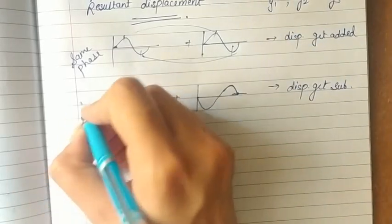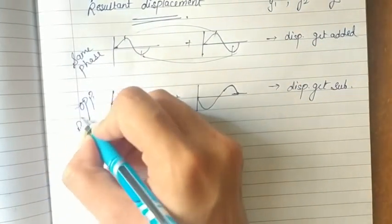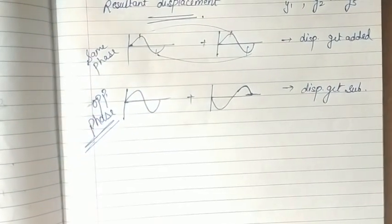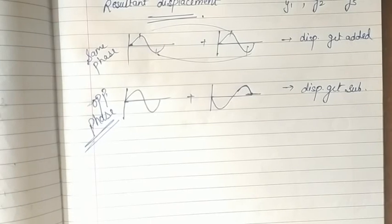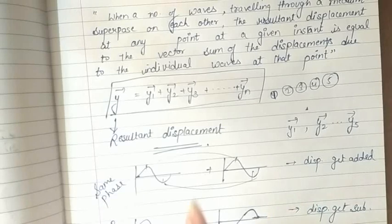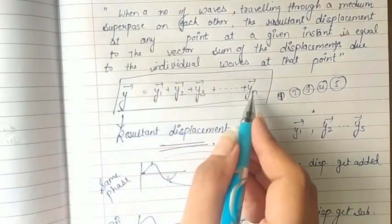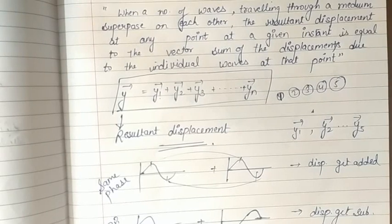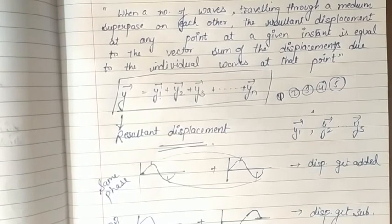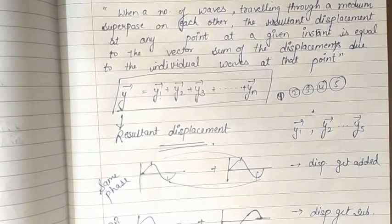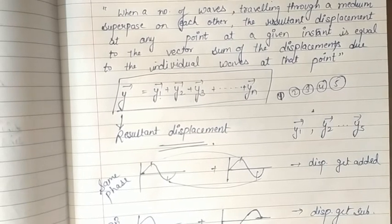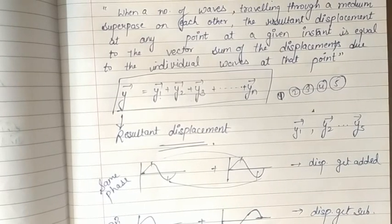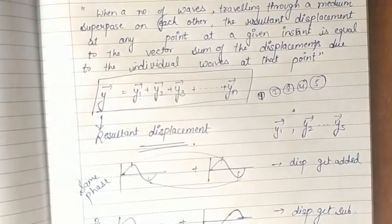So in case of opposite phase the displacements get subtracted, while in case of same phase the displacements get added, to get the resultant displacement equal to the vector sum of all individual displacements at that point at any instant. The result of this principle of superposition can be interference, diffraction, or sometimes beats. Beats we studied in class eleven in sound waves; here in optical phenomena we study interference and diffraction only. Our next topic will be interference — stay tuned and keep studying, thank you.